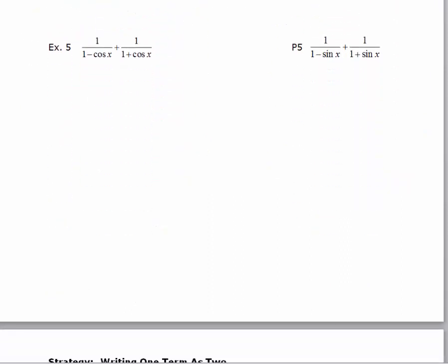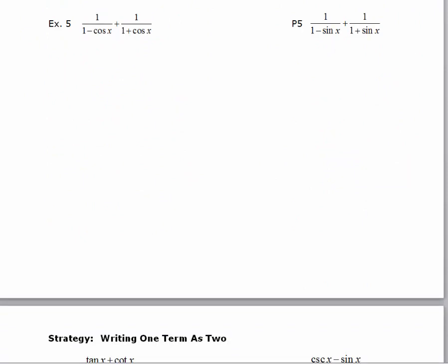Let's look at practice problem 5. Same thing, I'm going to rewrite this to give me a little more space. I'm going to multiply both sides by the missing factor to create a common denominator.